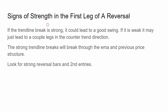Signs of strength in the first leg of a reversal. If the trend line break is strong, it could lead to a good swing. If it is weak, it may lead to only a couple of moves in the counter-trend direction. The strong trend line breaks will break through the EMA and the previous price structure. Look for strong reversal bars and second entries.